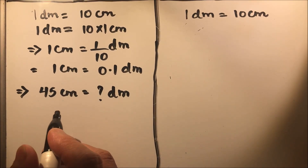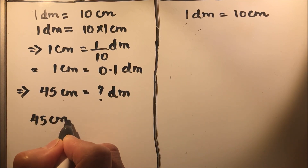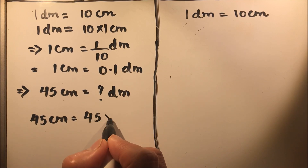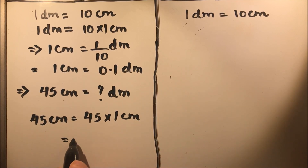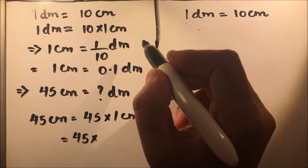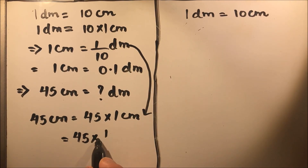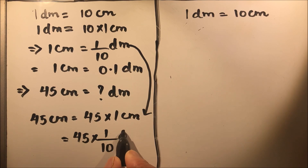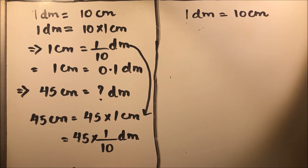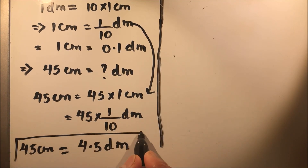We know that 45 centimeters can be written as 45 times one centimeter. In place of centimeter, we substitute the equivalent in decimeters, which is one tenth of a decimeter, or 0.1. So we write 1 over 10 decimeter, and this gives us 4.5 decimeters. So 45 centimeters equals 4.5 decimeters.